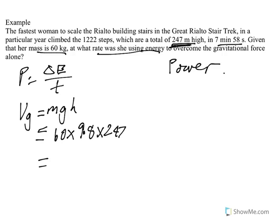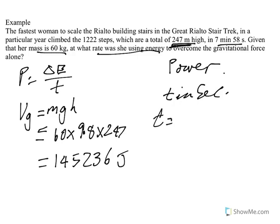So, when you multiply that out, you get 145,236 joules of energy being done. Now, the time, in physics time has got to be in seconds, so the time then is 7 times 60, 7 minutes, plus the 58. And when you do that, you get 478 seconds.